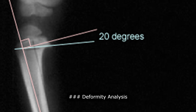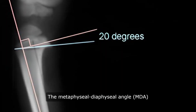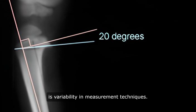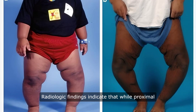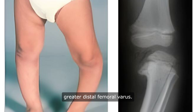Differentiating between physiologic genu varum and early onset Blount disease can be challenging. The metaphyseal-diaphyseal angle (MDA) of the tibia is a useful metric, although there is variability in measurement techniques. Radiologic findings indicate that while proximal tibial varus deformity is common in both early and late onset forms, late onset Blount disease often involves greater distal femoral varus.